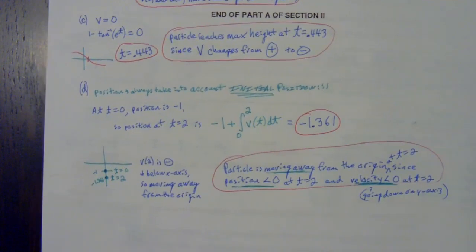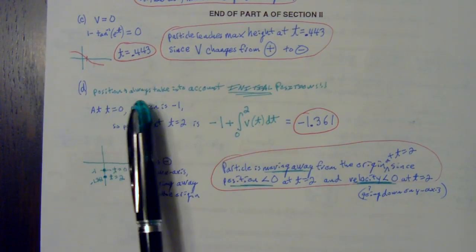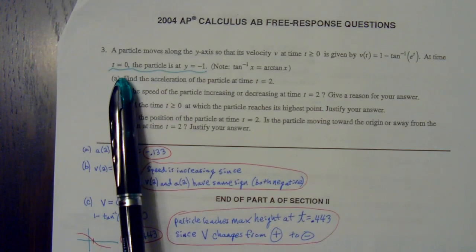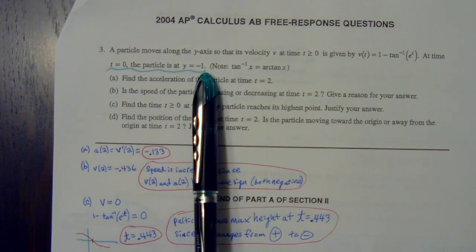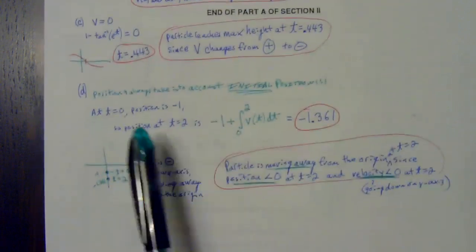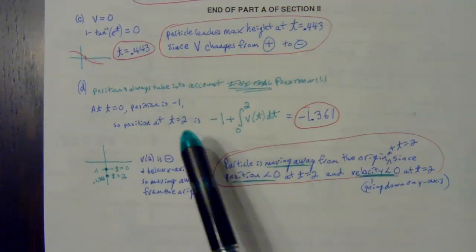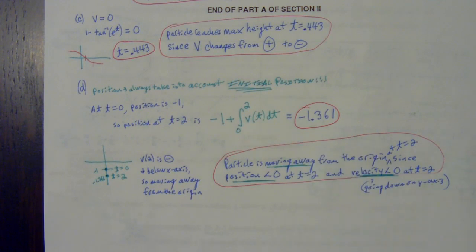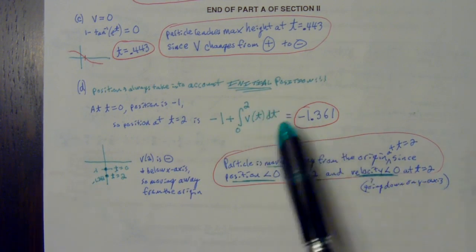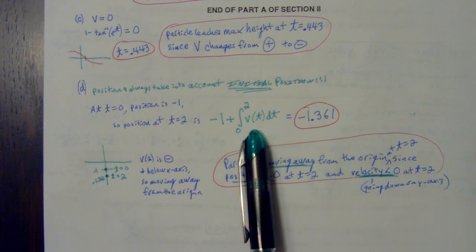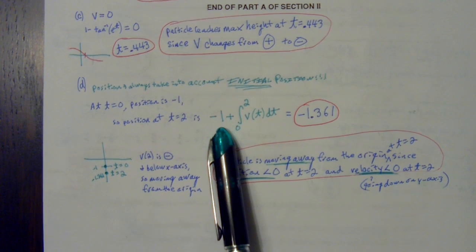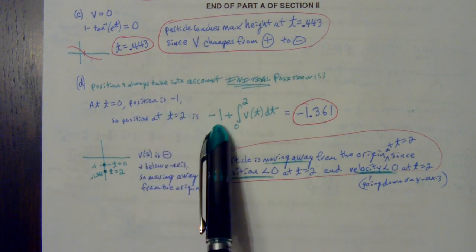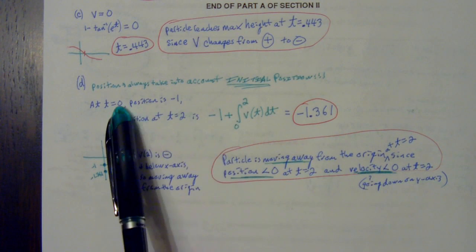Here's letter D all in one spot. When you do a position problem, you always got to take into account the initial position where you started. It told us at the beginning, at t equals zero, we're starting at the y-axis at y equals negative one. At t equals zero, your position is already at negative one. If you want to figure out where did you go in between zero seconds and two seconds, you integrate that velocity. When you integrate the velocity, it gets you that position. When I integrate between zero and two, all that tells me is how far did I go in those two seconds, but you got to always take into account your initial position where you started.